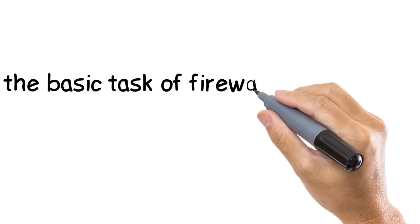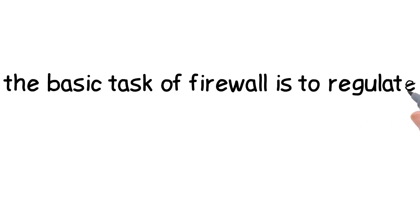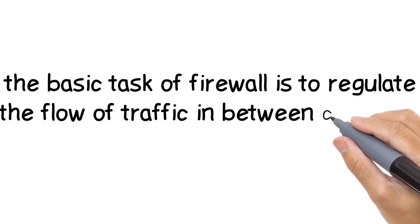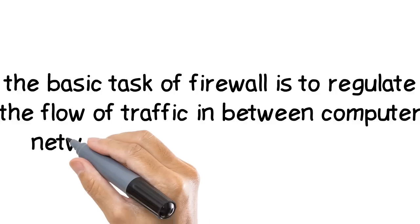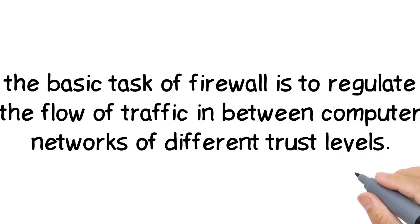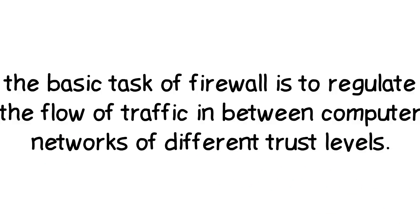The basic task of a firewall is to regulate the flow of traffic between computer networks of different trust levels. For example, the internet, which is a zone of no trust, and your home network, which is a zone of high trust.